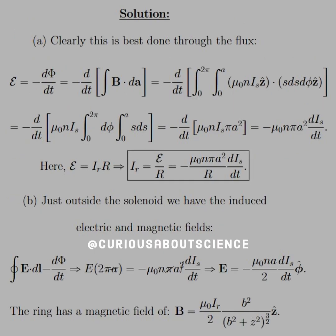Clearly this is best done through flux. We have E equals negative d phi dt. And if we just plug in what phi is, that's B dot dA in the integral form. So take the time derivative out. We have a solenoid here, so we get mu naught NIS Z dot S dS d phi in the z direction, from 0 to 2 pi, 0 to A for the radius. Surface integral, not that big a deal.